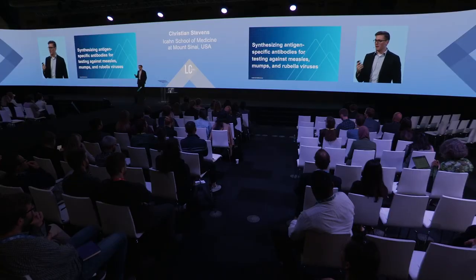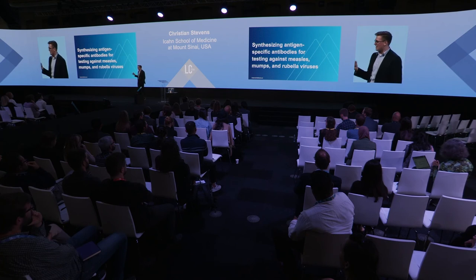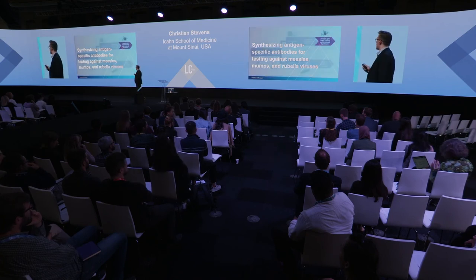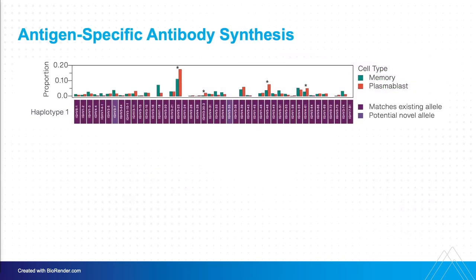We synthesized antigen-specific antibodies pulled from individual plasmablasts using those paired heavy and light chain transcripts, aligned them to different genes, and then synthesized them. We're going to test them against measles, mumps, and rubella virus in the lab — we're primarily a virology lab, so it's exciting to get the virus part in here. We got these synthesized in China, but with the lockdown happening in Shanghai they got significantly delayed and we've only just started receiving them. We even got three from that potentially novel allele, which will be exciting to see if they neutralize or match up on ELISAs.